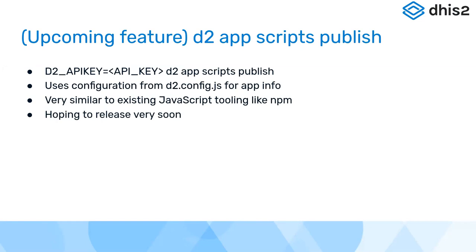This new publish script uses the configuration in your d2 config.js, which should already be present in an App Platform app. If your application is outside of the App Platform you'll probably have a manifest, and we recommend moving to the new d2 config. Through the d2 config you can specify your app version, minimum DHIS2 version, maximum DHIS2 version, and other information you'd normally provide in the web interface. This script is very similar to npm publish — it takes your app, creates a bundle, and uploads it to the App Hub using the API key. We've got a PR open and we're hoping to push it through very soon.